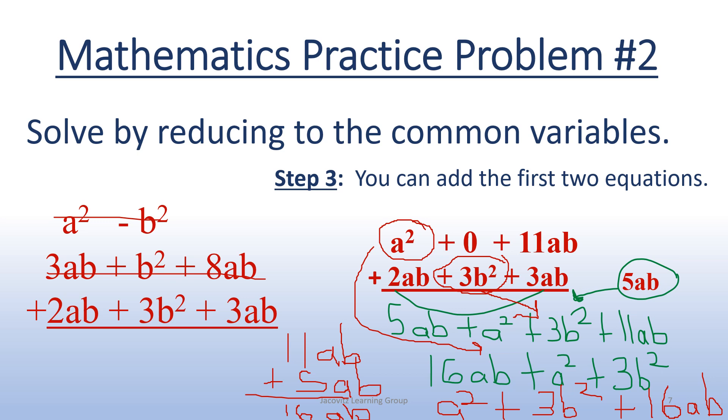And I'm going to go ahead and add AB here. And this is why you have 16AB. And you can write this, usually when you write an equation out, probably in the answer it'll say a squared plus 3B squared plus 16AB. That's the math situation. By the way, we're the Jacobitz Learning Group. If you have any questions, jacovitzlearning at gmail.com.